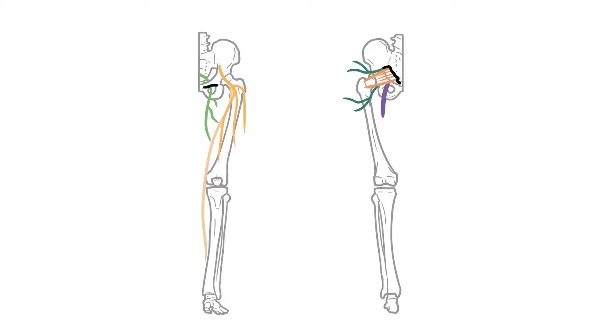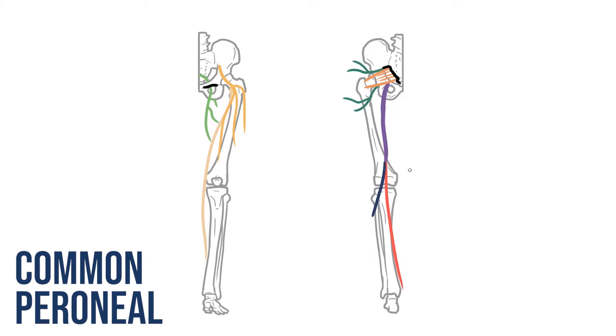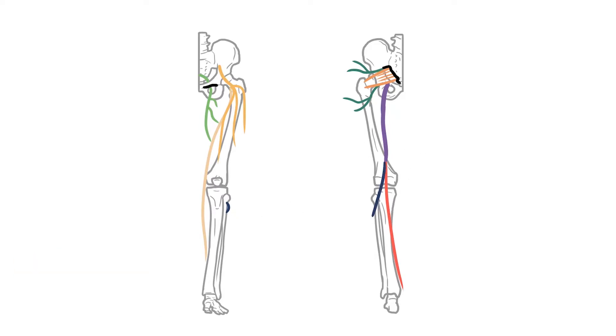The sciatic continues down the posterior aspect of the thigh until it reaches the space at the back of the knee known as the popliteal fossa. Here it divides into two major branches. The tibial nerve passes deep into the posterior leg and onto the sole of the foot. The common peroneal or fibular nerve heads laterally, passing around the neck of the fibula before dividing again.